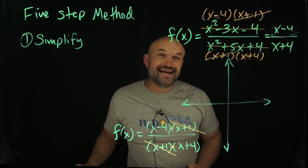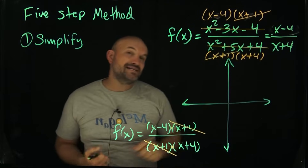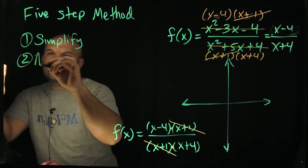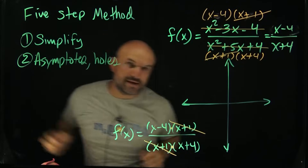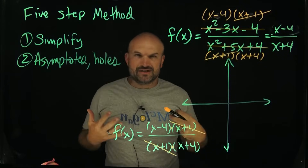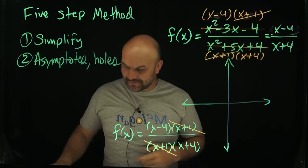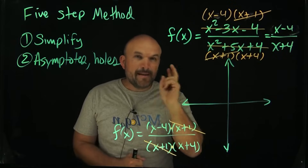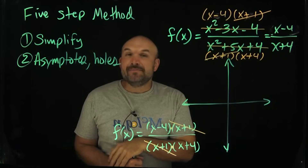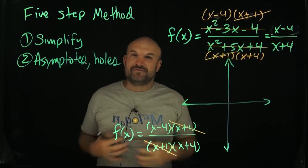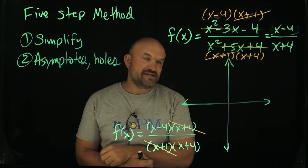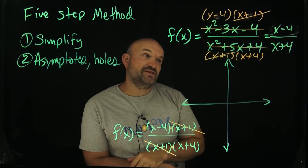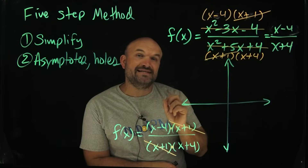Step number two is to identify the asymptotes — vertical, horizontal, and oblique — and the holes. A lot of times students ask: what's the difference between an asymptote and a hole? An asymptote is what we call a non-removable discontinuity. A hole is a removable discontinuity. Both have the word discontinuity in common, meaning they are not actually part of the graph or are not defined for the function. The only values not defined are those that make the denominator equal to zero.